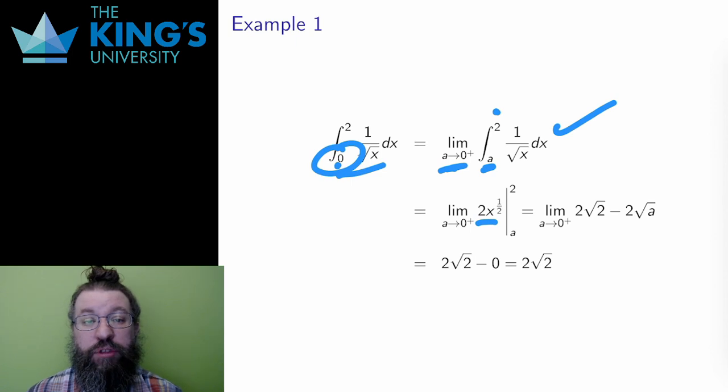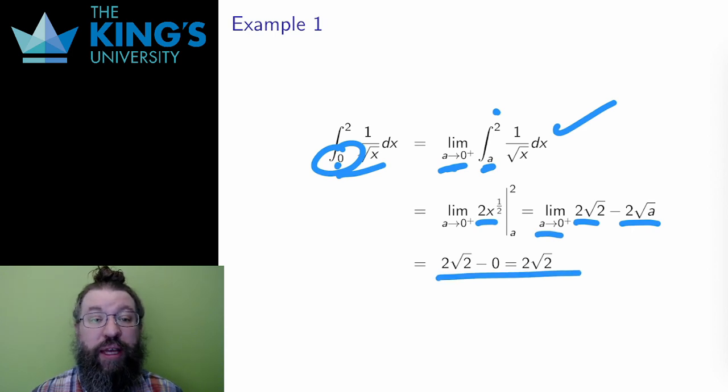Well, then I can evaluate on the bounds, which gives 2 root 2 minus 2 root a. Then I can take the limit as a goes to 0, and I simply get 2 root 2.